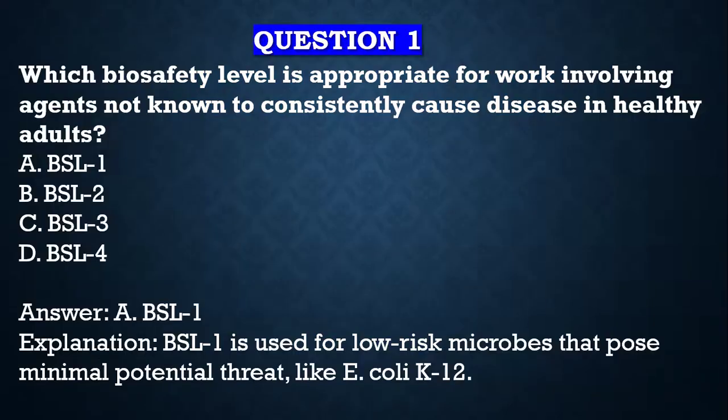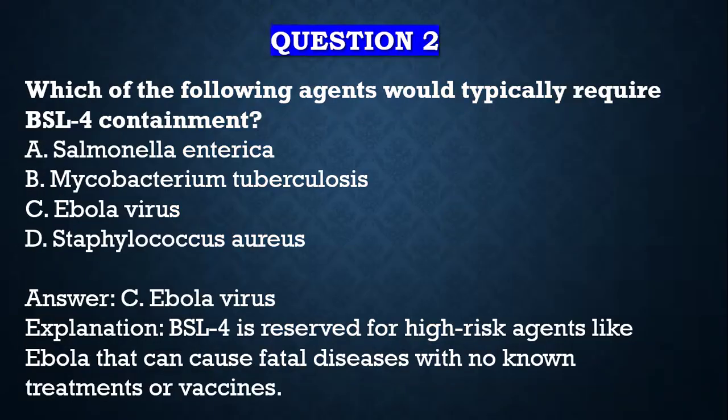Question number one: which biosafety level is appropriate for work involving agents not known to consistently cause disease in healthy adults? A) BSL1, B) BSL2, C) BSL3, D) BSL4. Your answer is BSL1, because BSL1 is used for low-risk microbes that pose minimal potential threat, like E. coli K12.